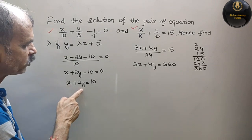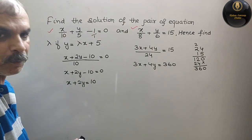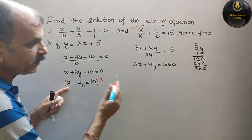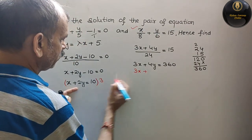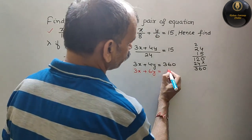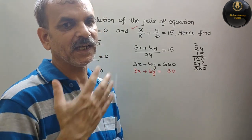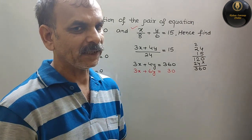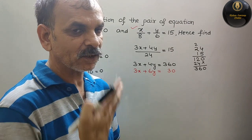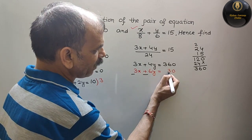अब equations देखो: x + 2y = 10 और 3x + 4y = 360। x को eliminate करने के लिए पहली equation को 3 से multiply करते हैं। तो आजाएगा: 3x + 6y = 30। अब coefficients equal हो गए, तो sign change करके subtract करेंगे — plus को minus करेंगे।